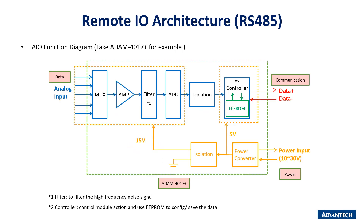For the Remote I/O architecture, we take the ADAM-4017+ as an example. It is an analog input module. The hardware architecture is divided into three parts: data input, communication, and power input. Analog data transfers through the data part into the module, going through a multiplexer first, then amplification and filtering, then to the ADC for conversion — similar to the DAQ card. The data is then transferred to the controller and uses EEPROM to configure and save data, before being transmitted via RS-485 to the computer.